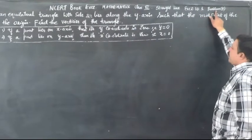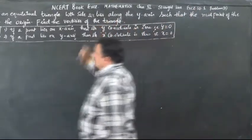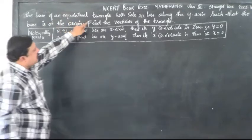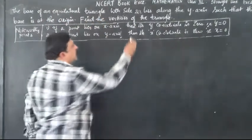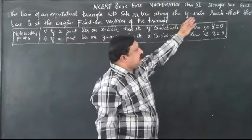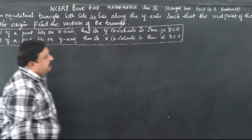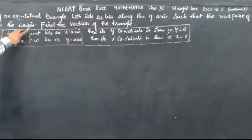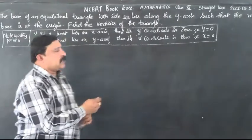Exercise 10.1, Problem 2. The problem says: the base of an equilateral triangle with side 2a lies on the y-axis such that the midpoint of the base is at the origin. Find the vertices of the triangle.